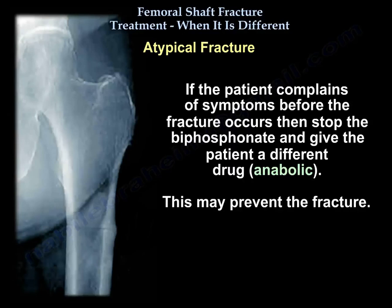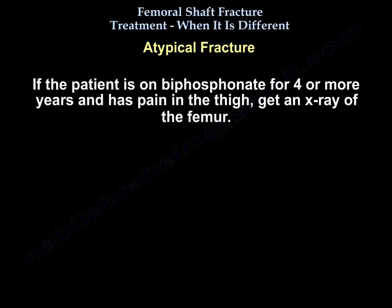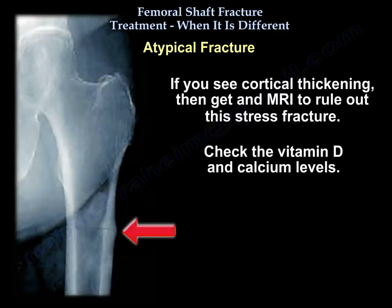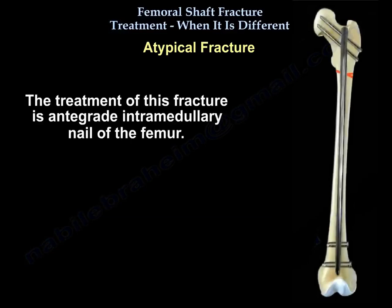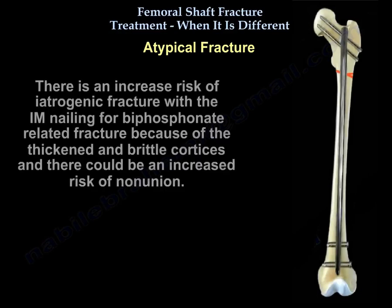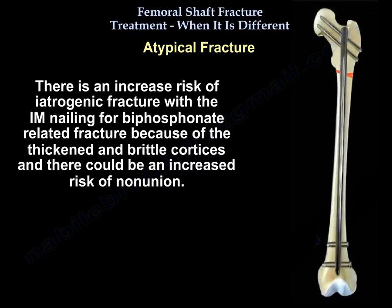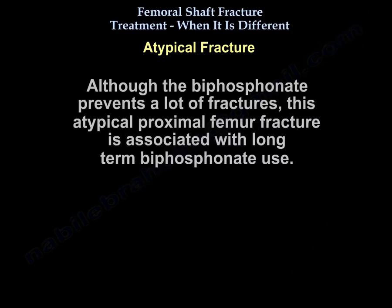A simple transverse fracture with cortical hypertrophy could be pathognomonic. The patient will complain of symptoms before the fracture occurs. Stop the bisphosphonate and give the patient a different drug — this may prevent the fracture. If the patient has been on bisphosphonates for four or more years and has thigh pain, get an X-ray of the femur. If you see cortical thickening, get an MRI to rule out stress fracture, and check vitamin D and calcium levels. The treatment is antegrade intramedullary nail of the femur. There is an increased risk of iatrogenic fracture with intramedullary nailing for bisphosphonate-related fractures due to thickened and brittle cortices, and an increased risk of non-union. Although bisphosphonates prevent many fractures, this atypical proximal femur fracture is associated with long-term bisphosphonate use.